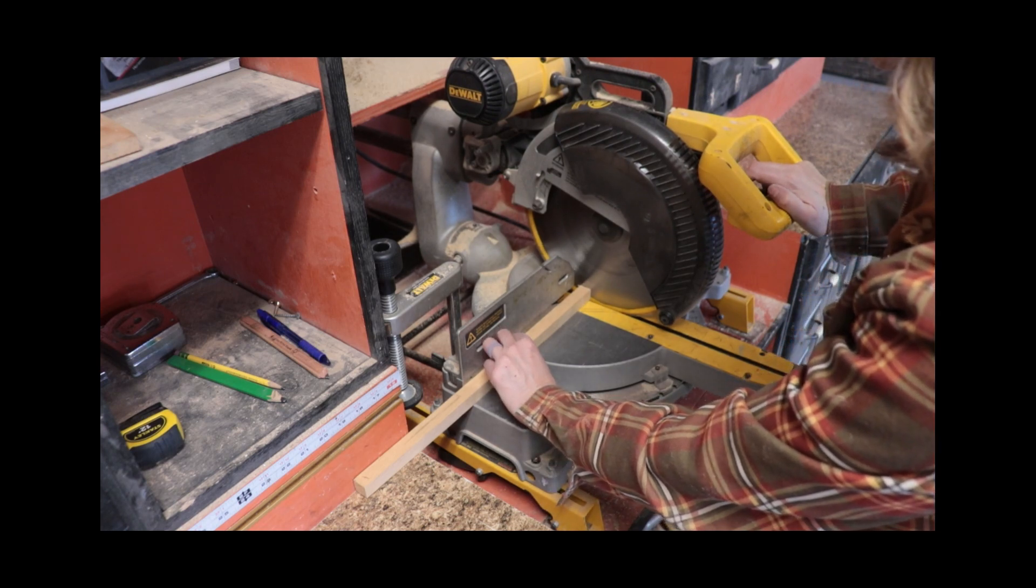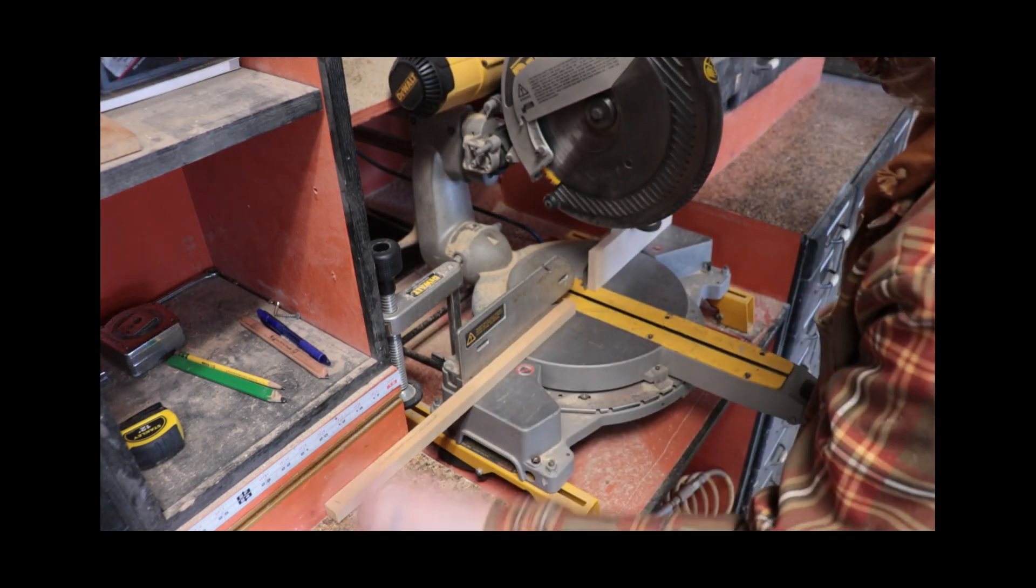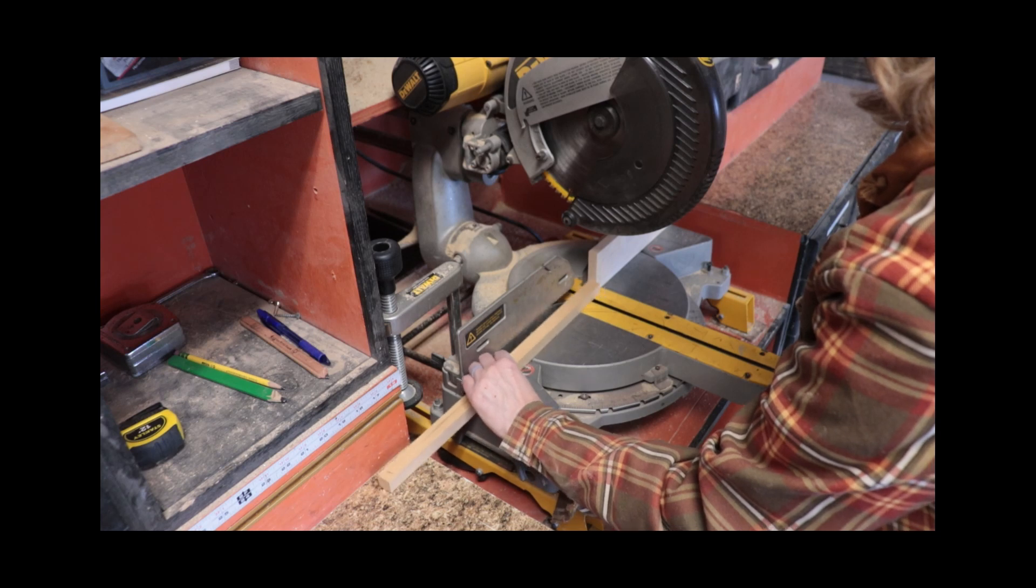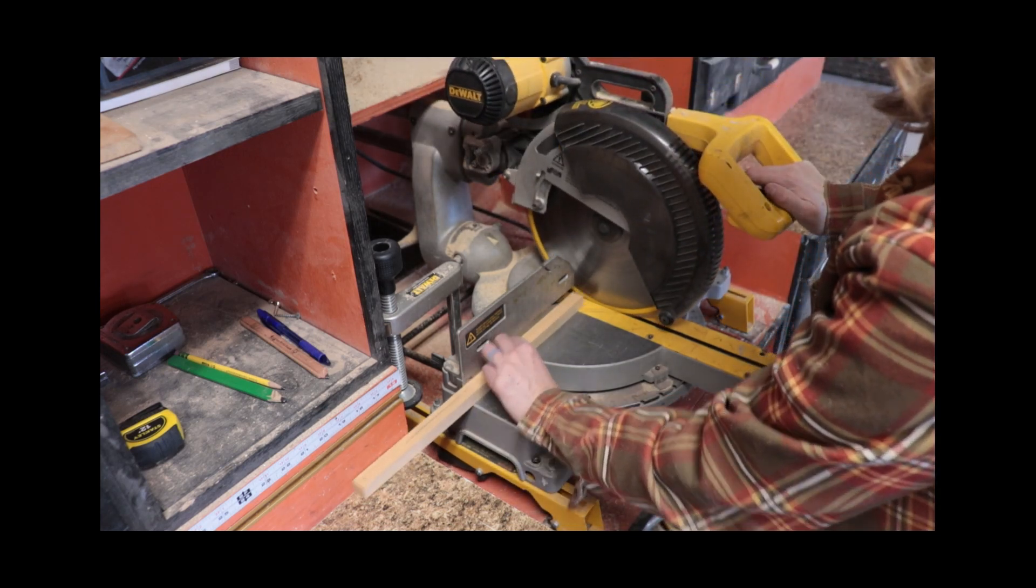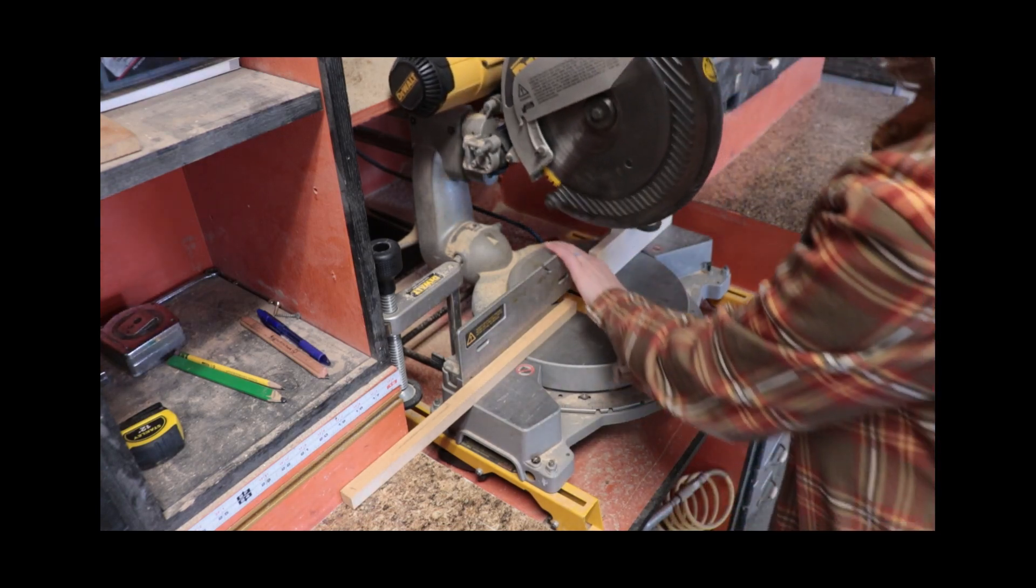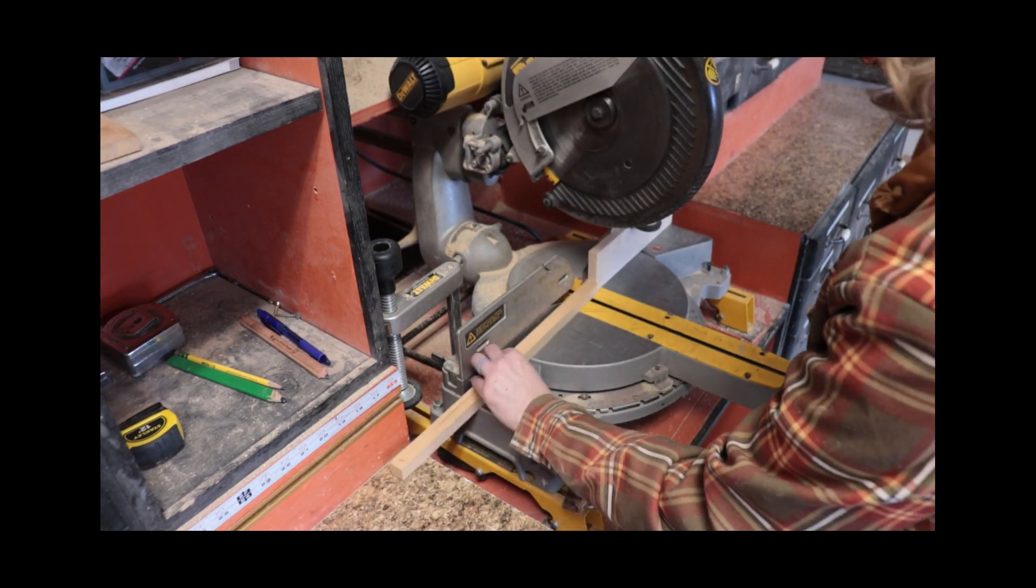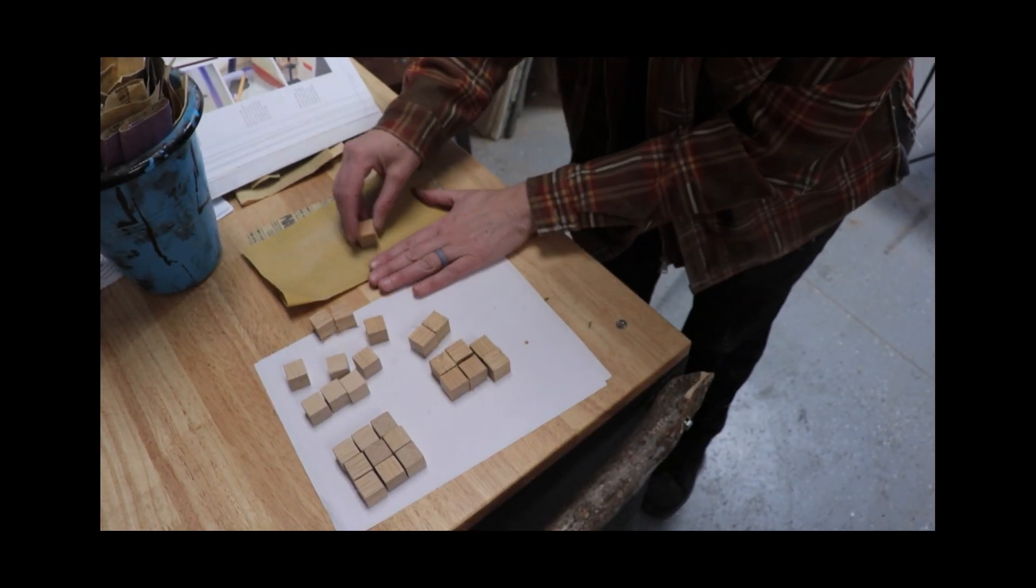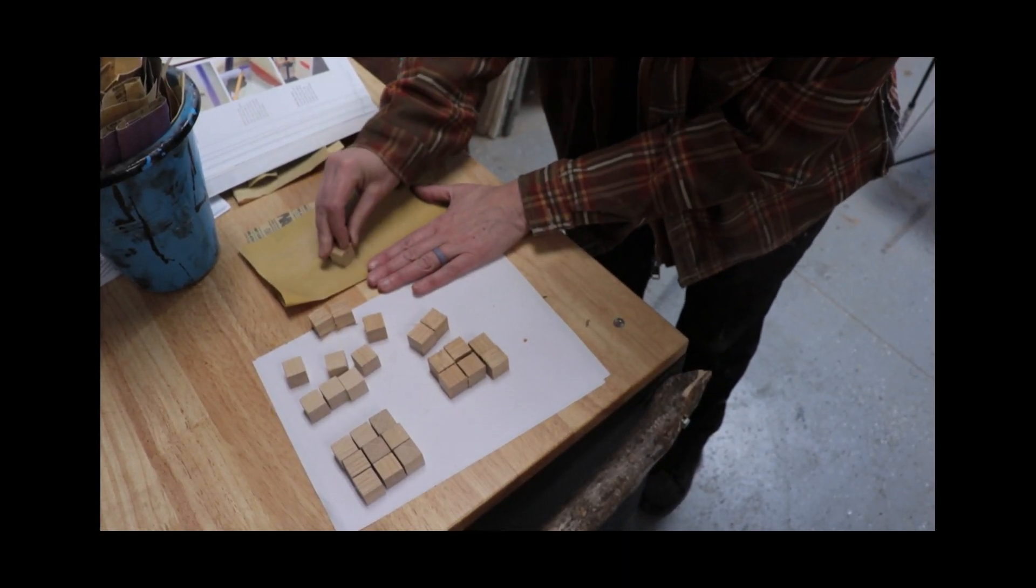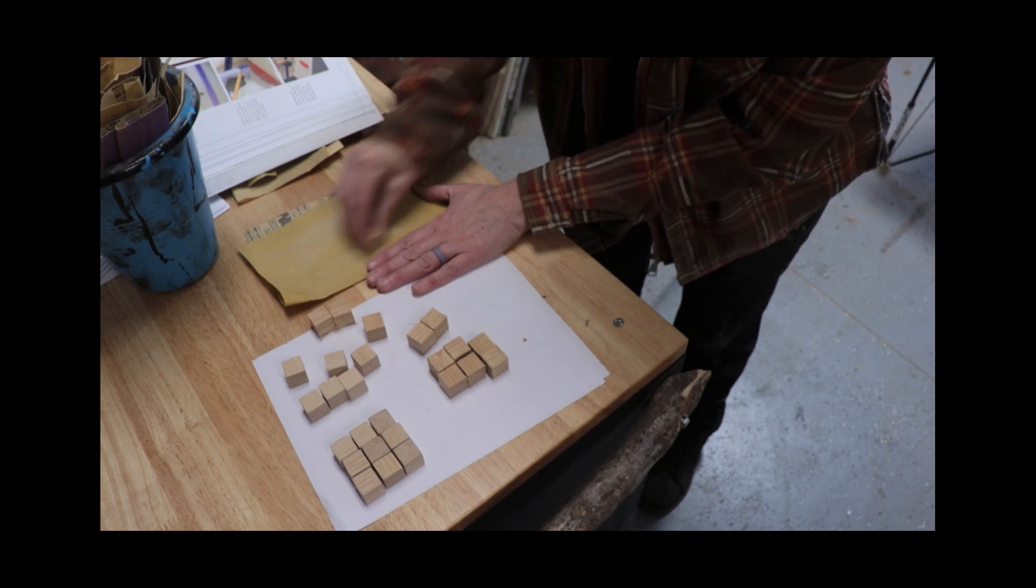I had to let the blades stop after each cut so the piece wouldn't fly out, because it tends to do that with the stop block in there. So slowly I cut out all 27 little pieces. And since I used the miter saw, I sanded all those little pieces. They had a lot of tear out, but it looked fine after sanding.